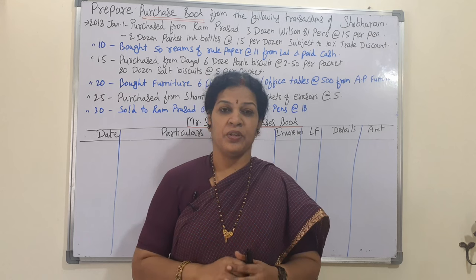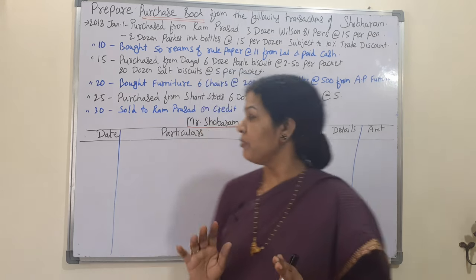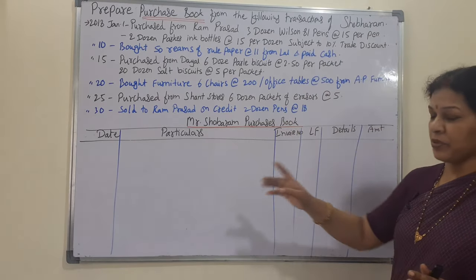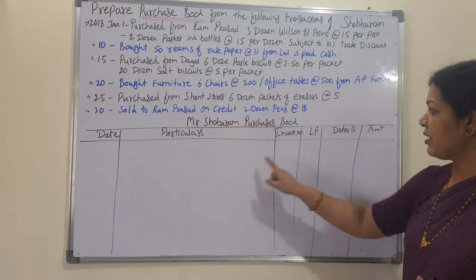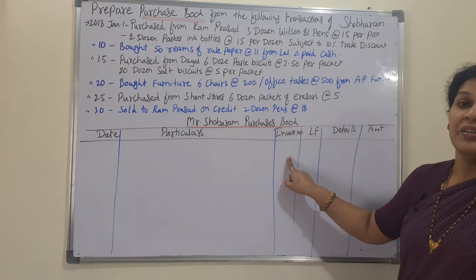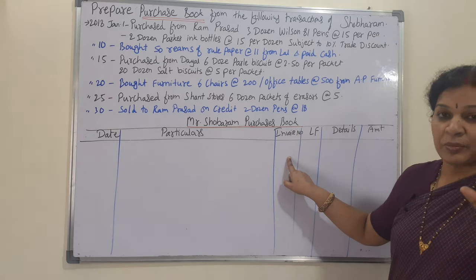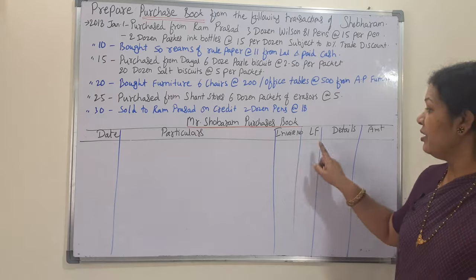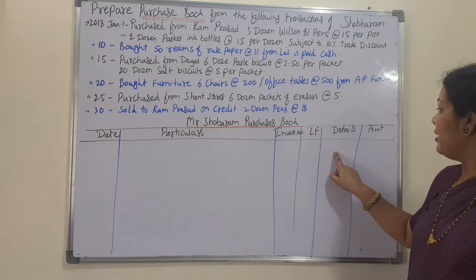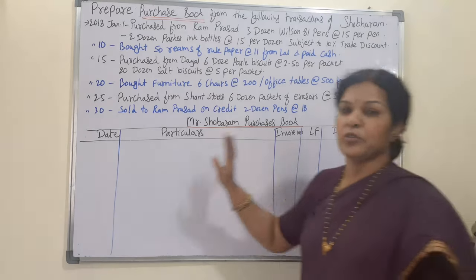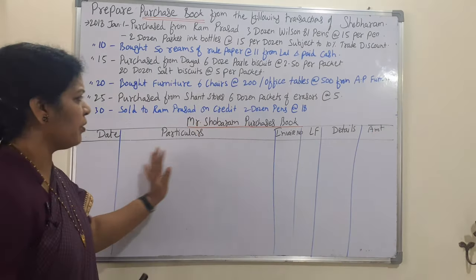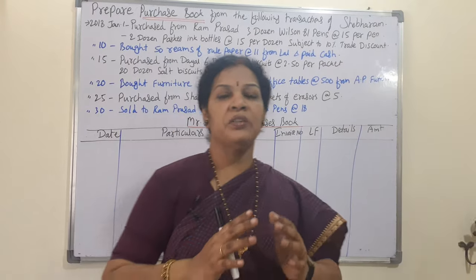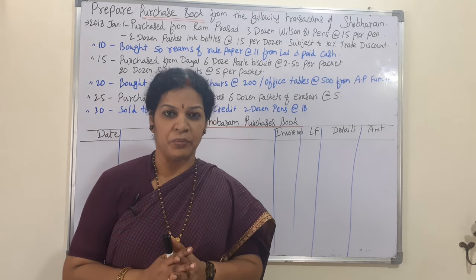The format of the purchase book will be like this for Mr. Shobaram's purchase book. First we write the date, then particulars, then invoice number — whenever you are purchasing anything, some receipt will be there, that invoice number we write — then ledger folio, details, and amount. These are the general columns of the purchase book format.